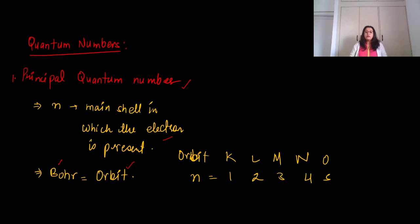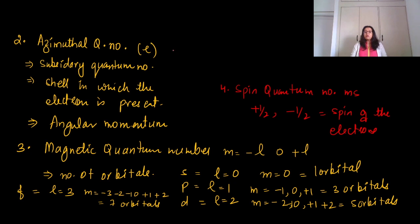Second, we have azimuthal quantum number, also called subsidiary quantum number. It tells us the subshell in which the electron is present. It gives us the angular momentum also. Then spin quantum number, plus half and minus half, gives us the spin of the electron. Magnetic quantum number, m equals minus l to plus l, gives us the number of orbitals which are present.